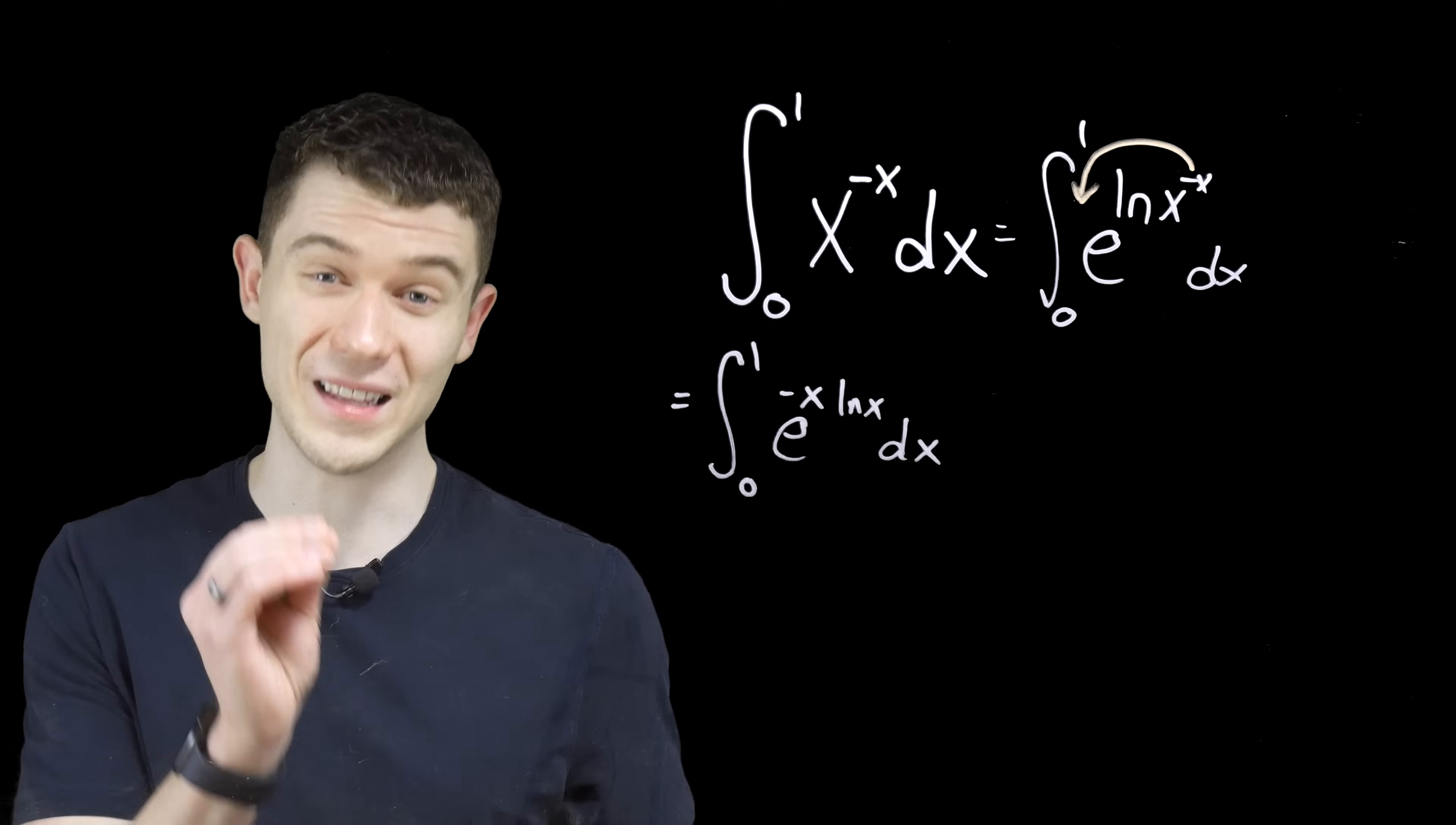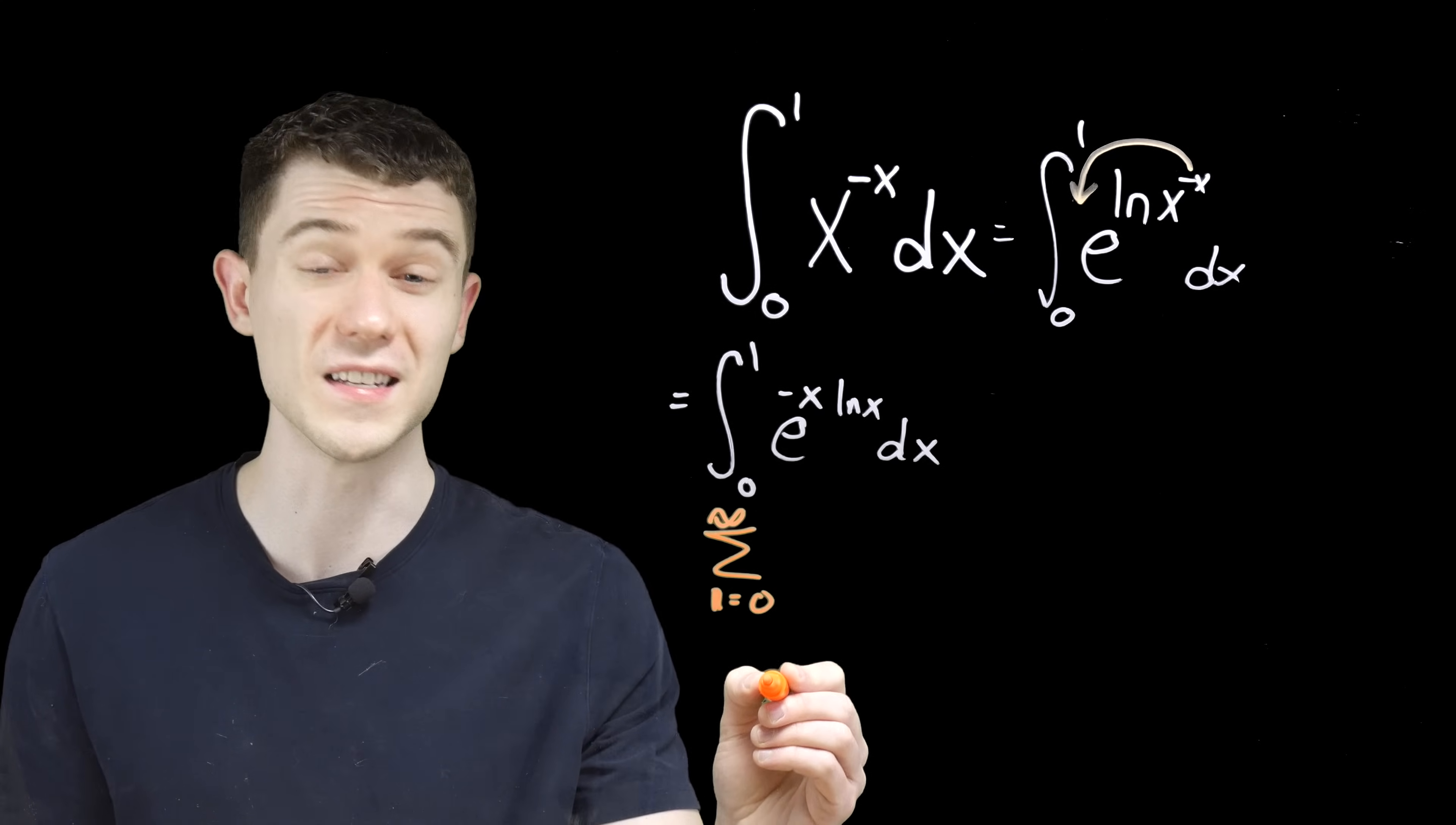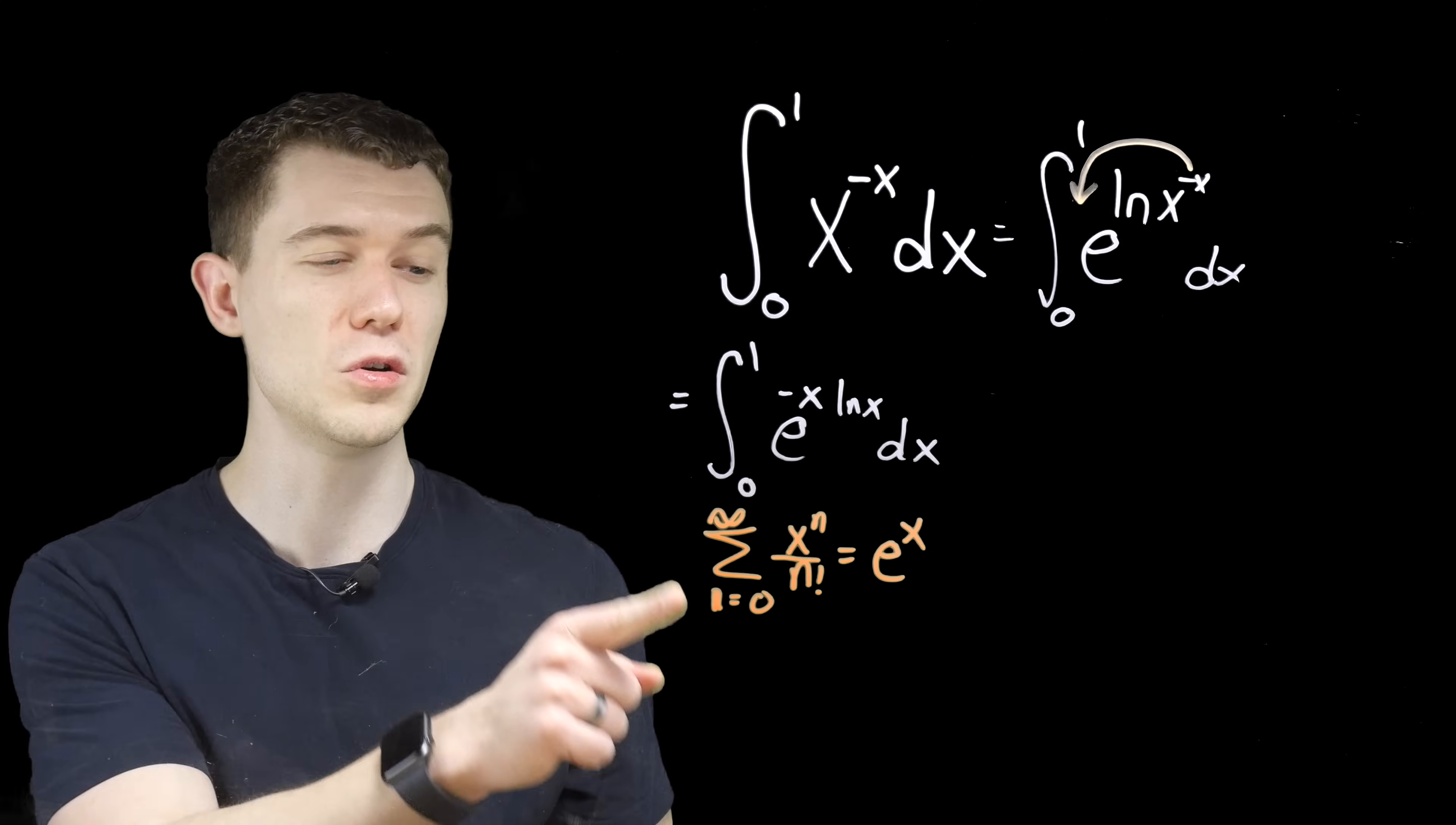So how do we integrate this? And this is the first place we need to draw upon some outside knowledge. We're going to use power series here. Remember, the power series of e to the x can be given as this, the sum from 0 to infinity of x to the n over n factorial. This is known to be e to the x. It's just we don't have e to the x. We have e to the minus x ln of x. So we'll use this sum, but we'll replace x with minus x ln x.